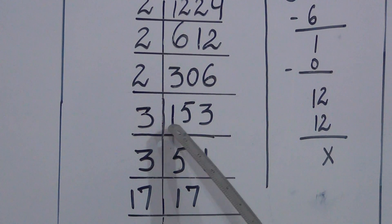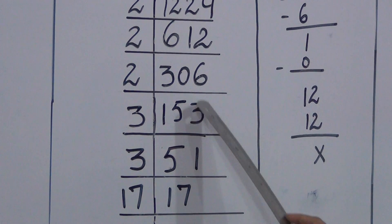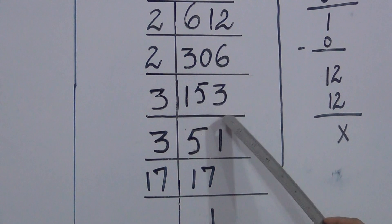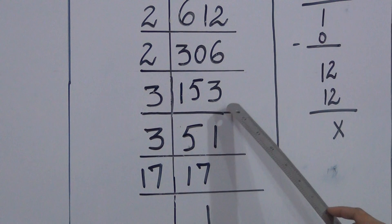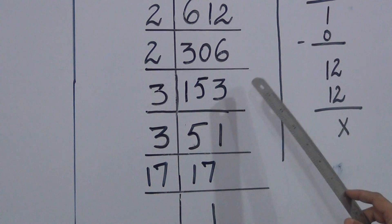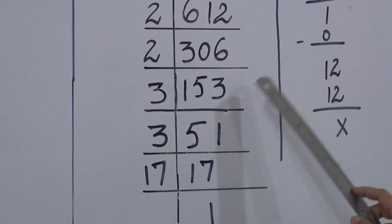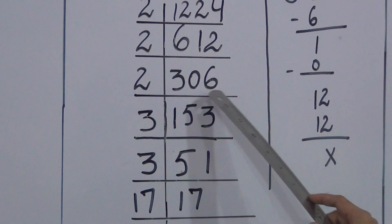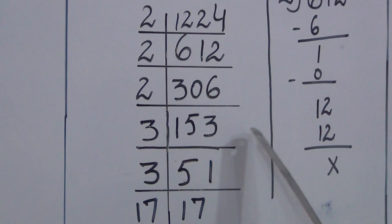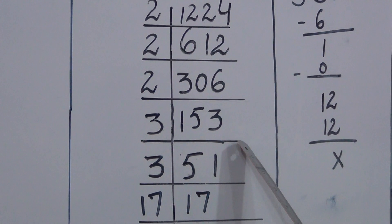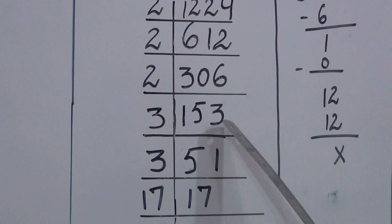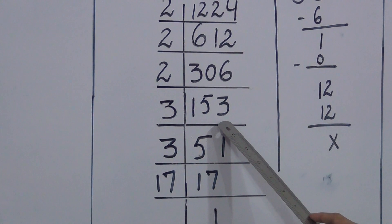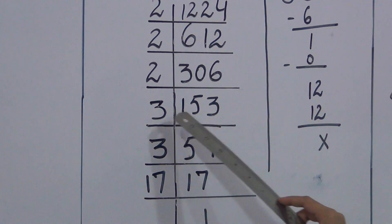We now get the number 153. The last digit of 153 is 3, which is not 0, 2, 4, 6, or 8. So 153 is not an even number. We will check this number with the next prime number, which is 3.